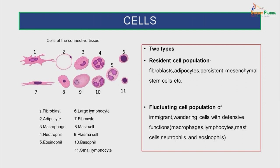Coming to the cellular component of the connective tissues, we have two types: the resident cell population and the fluctuating cell population. The resident cell population includes the fibroblasts, adipocytes, and persistent mesenchymal stem cells. The fluctuating cell population consists of immigrant wandering cells with defensive functions, which include the macrophages, lymphocytes, mast cells, neutrophils and eosinophils.